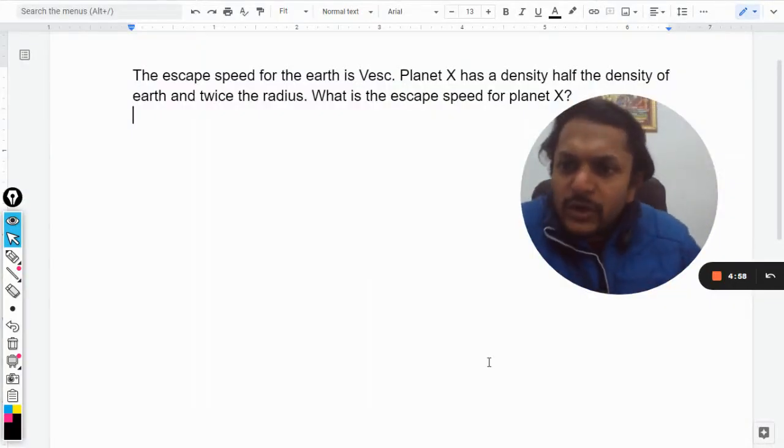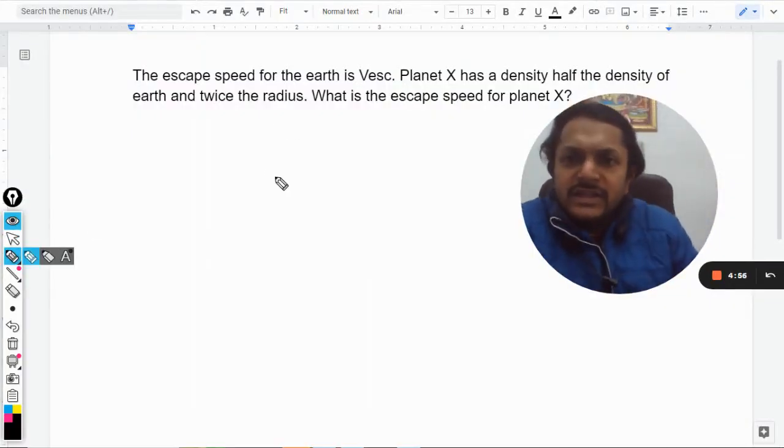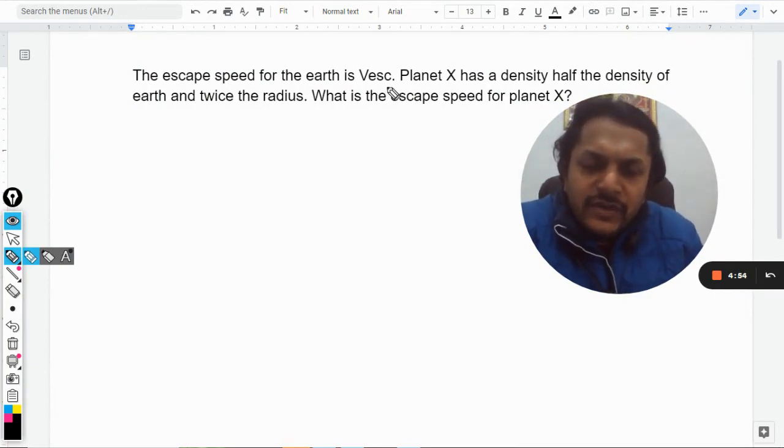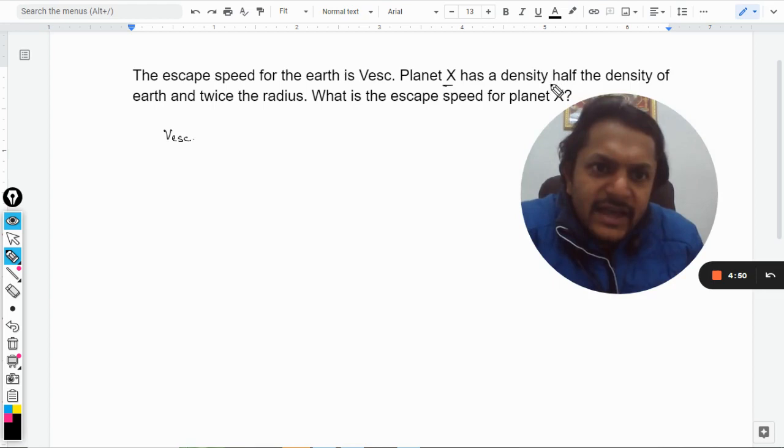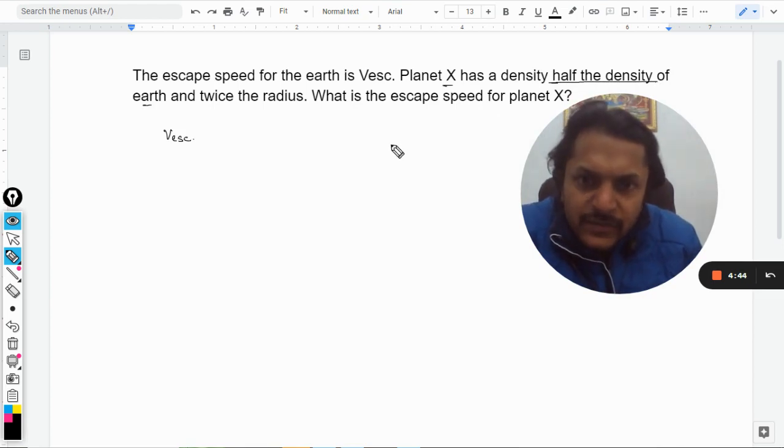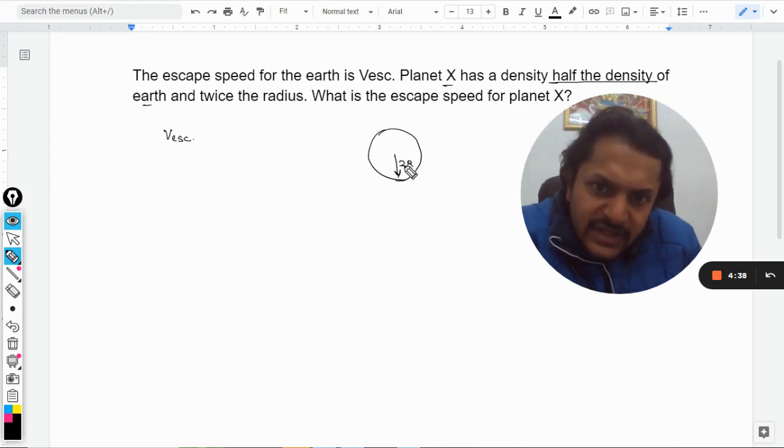Okay dear students, let us see what is there in this question. The escape speed for the earth is V ESC. The planet X has the density half the density of the earth and twice the radius. So let us say there is this planet and the radius is twice that of the earth and density is half of it.